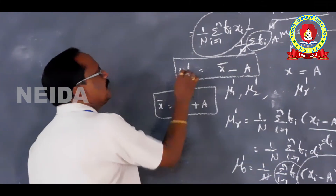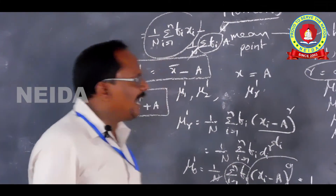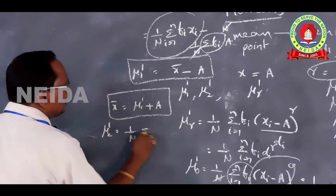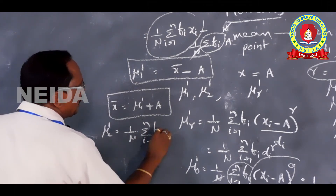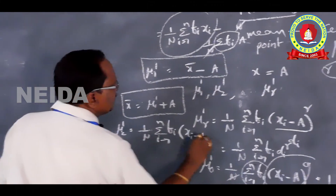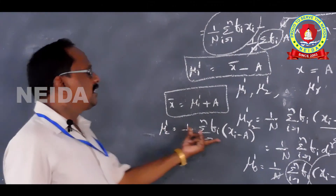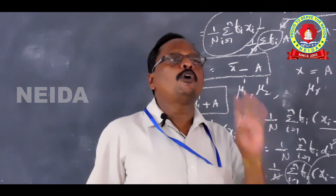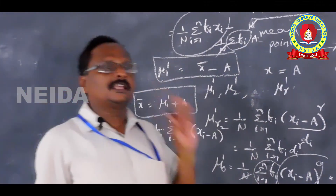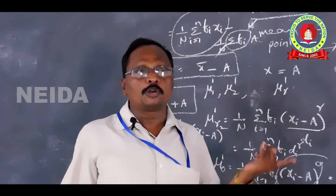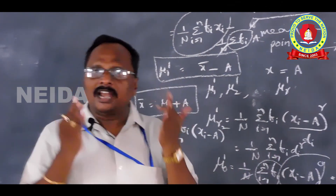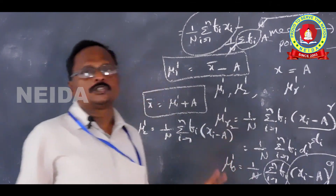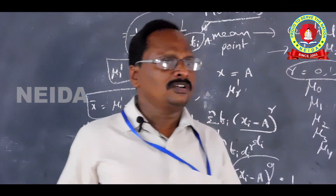For r = 2: μ₂' = (1/n) Σ fᵢ(xᵢ − A)². Similarly we can write μ₃' and μ₄'. In general we calculate only the first 4 moments, because calculating further moments becomes increasingly difficult. This is the introduction to moments in statistics. Thank you.